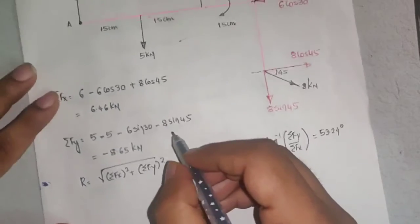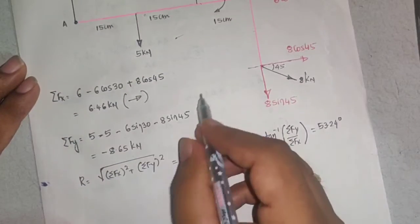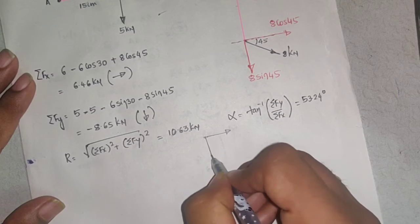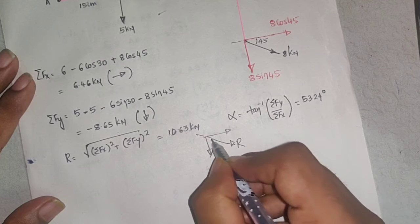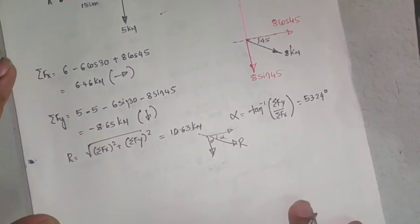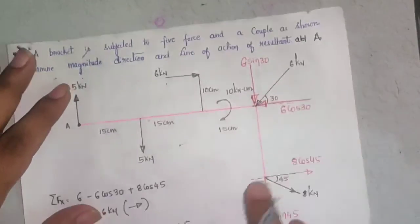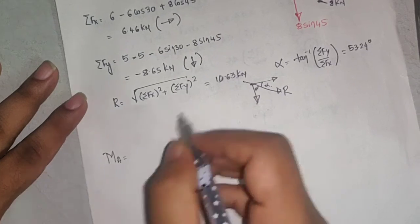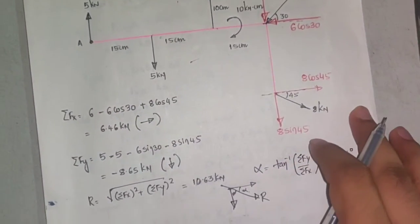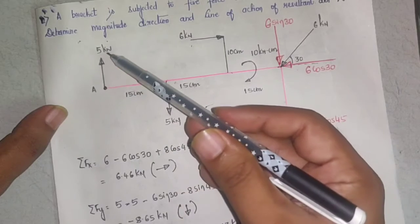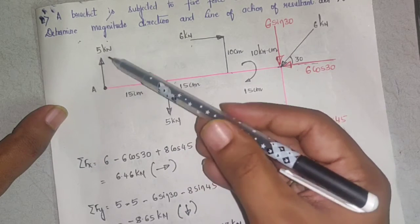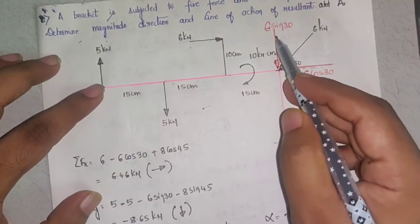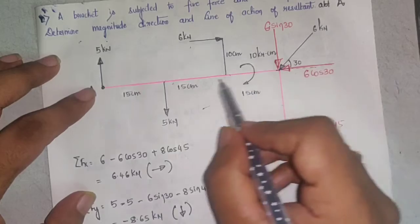Since ΣFx is positive (rightward) and ΣFy is negative (downward), the resultant acts downward to the right at 53.24 degrees. Taking moment about point A: the 5 kN force is in line with point A — zero moment. The 6 cos 30 force is also in line with point A — zero moment. These two forces give zero contribution.